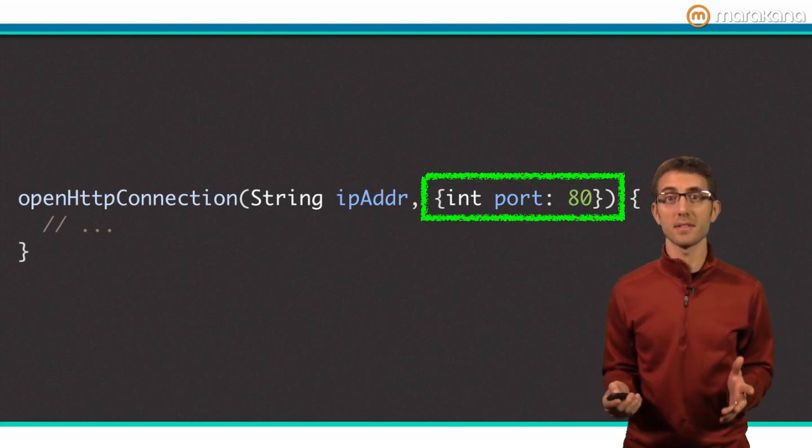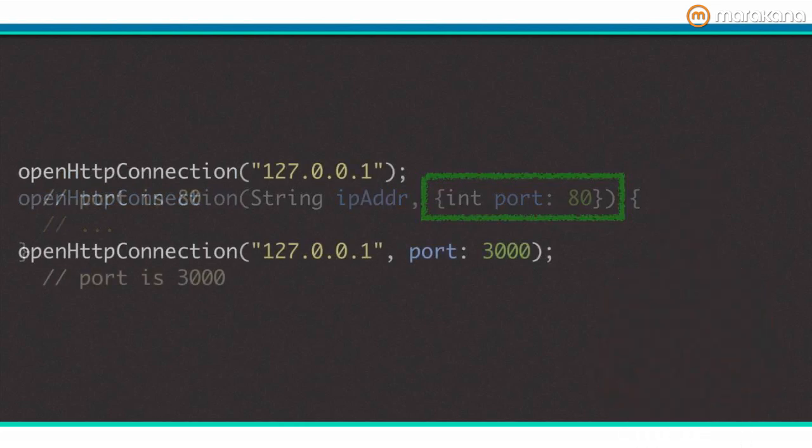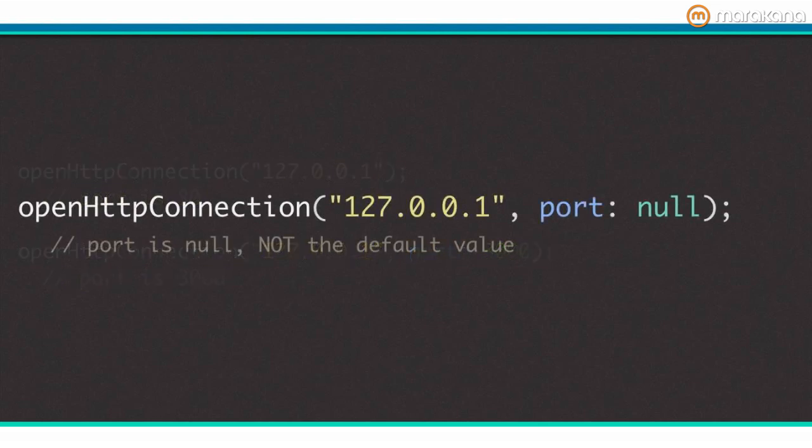You can use any compile time constants, such as integer literals as shown here, for default values. Here are some examples of using this function. However, here's an example that might not be totally clear. Notice how I am passing null as the second parameter. Null is a perfectly valid value, so in this case, port will be set to null even though it has a default value.